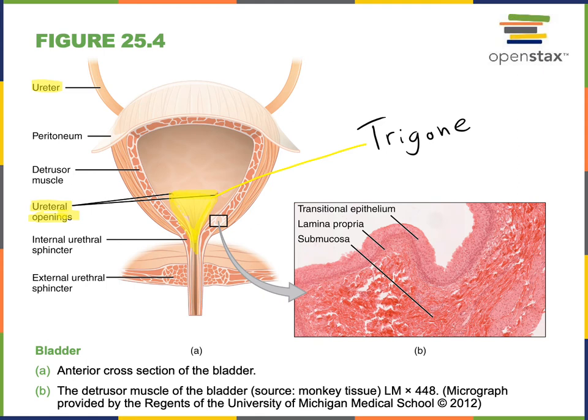The trigone contains stretch receptors — sensory receptors that detect filling of the urinary bladder — and relay this information through afferent fibers, sensory neurons that carry the signal into the spinal cord to provide input for the micturition reflex.